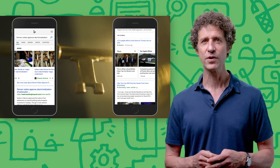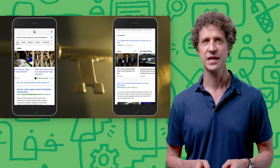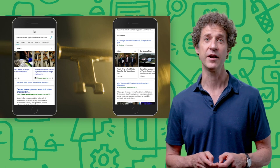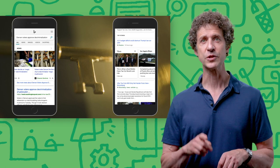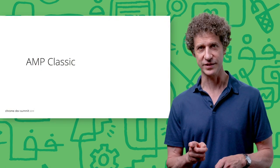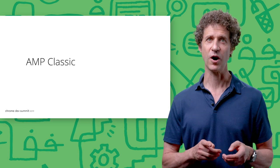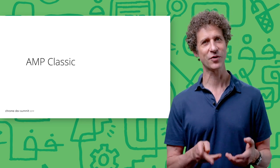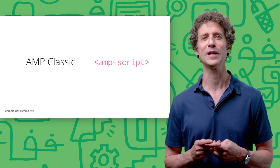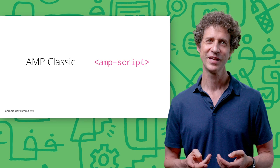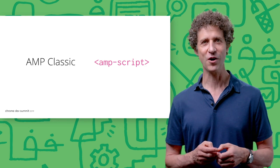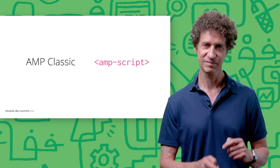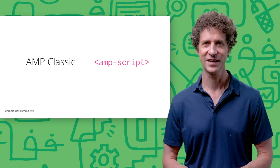While it's most known for pure content sites, AMP also provides tools to create interactivity. We'll talk about two ways to do this: the old way, which we'll call AMP classic, and AMP script. We could also call them JavaScript Lite and JavaScript Pro. So first, AMP classic.